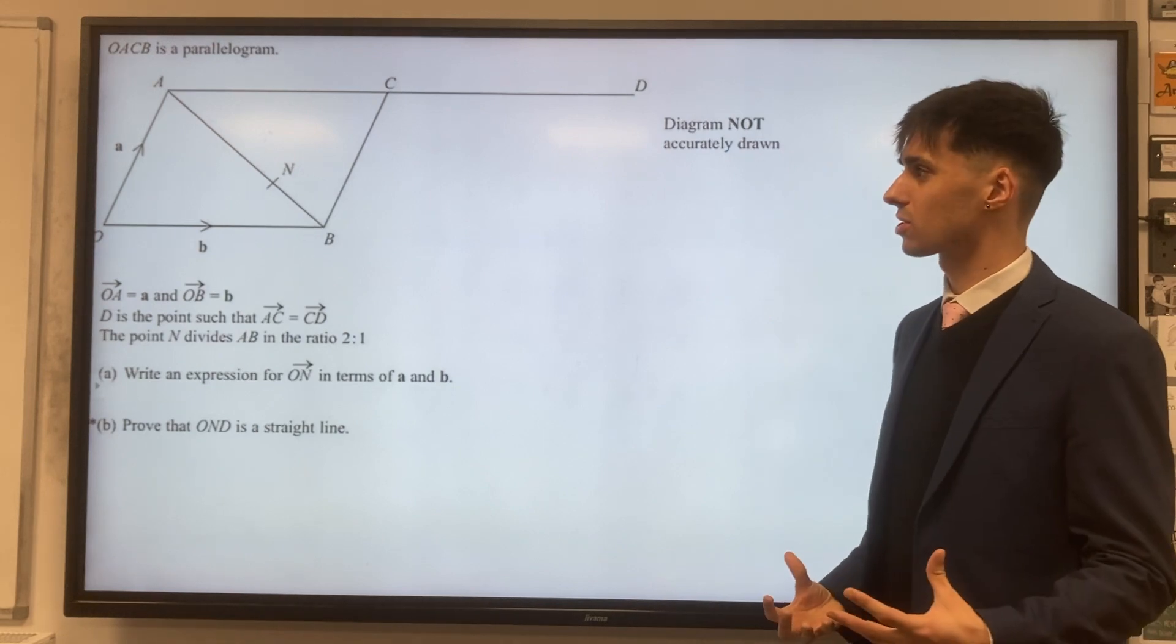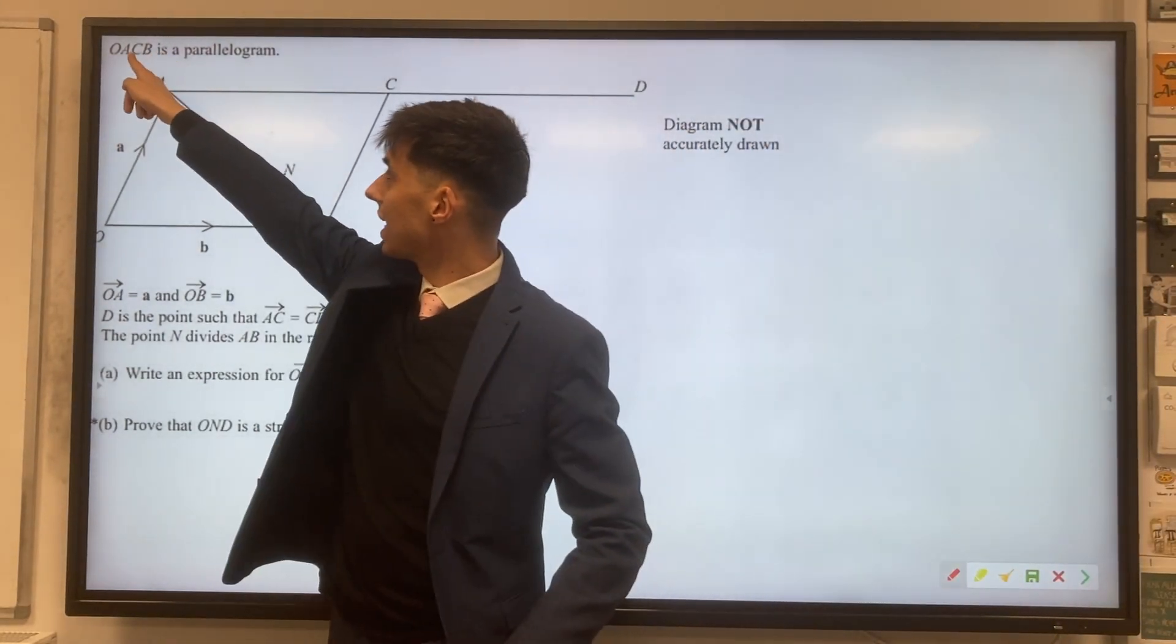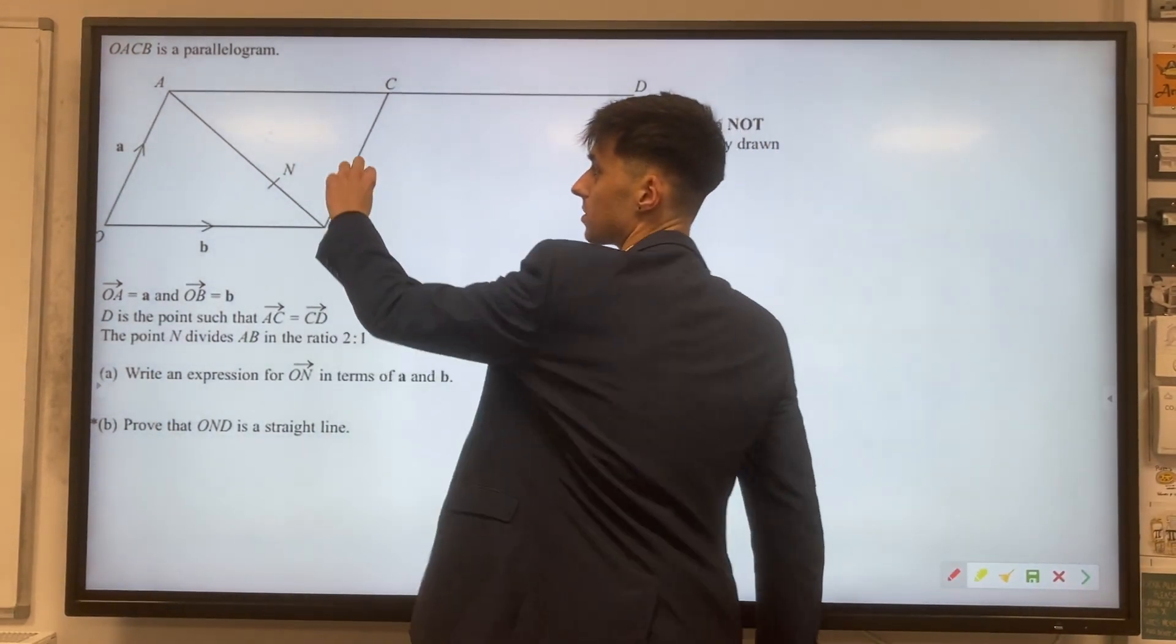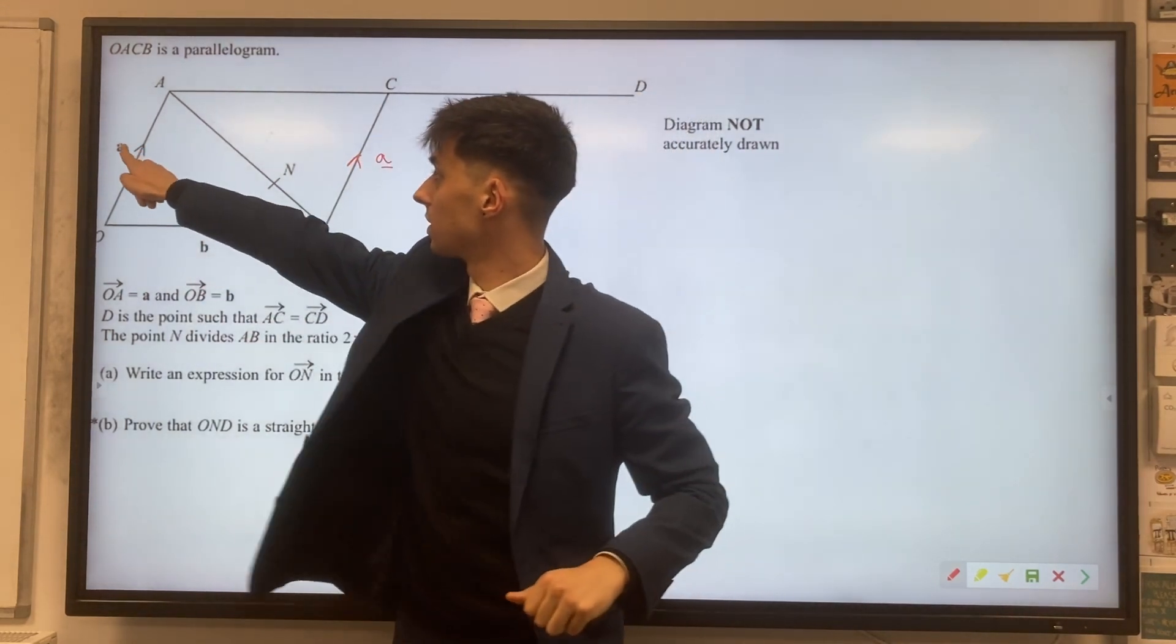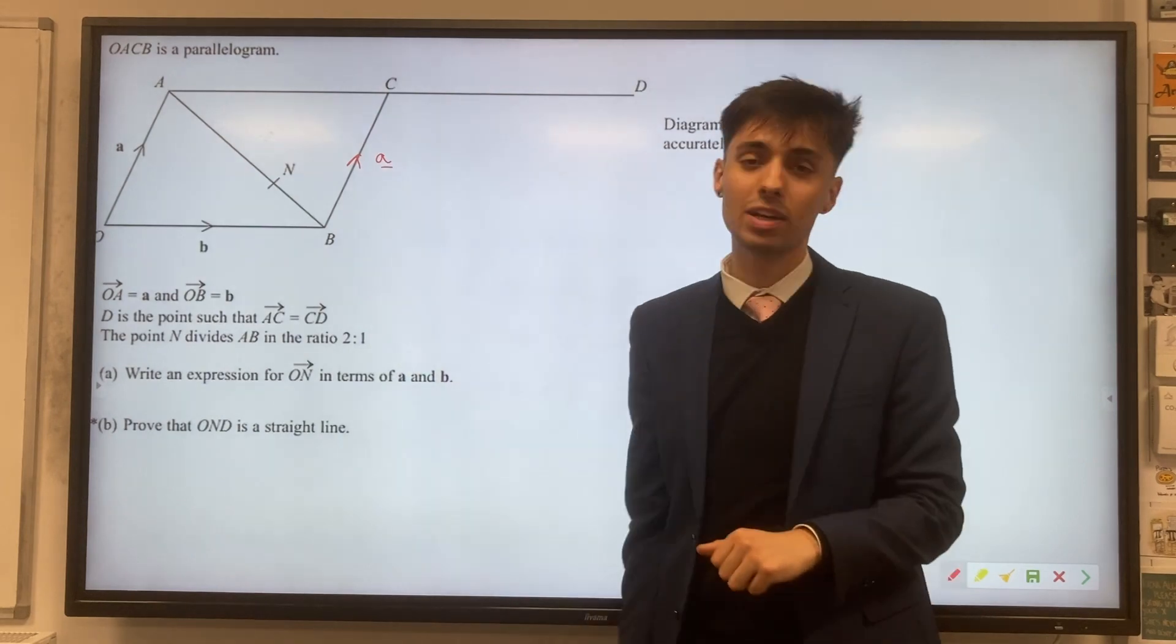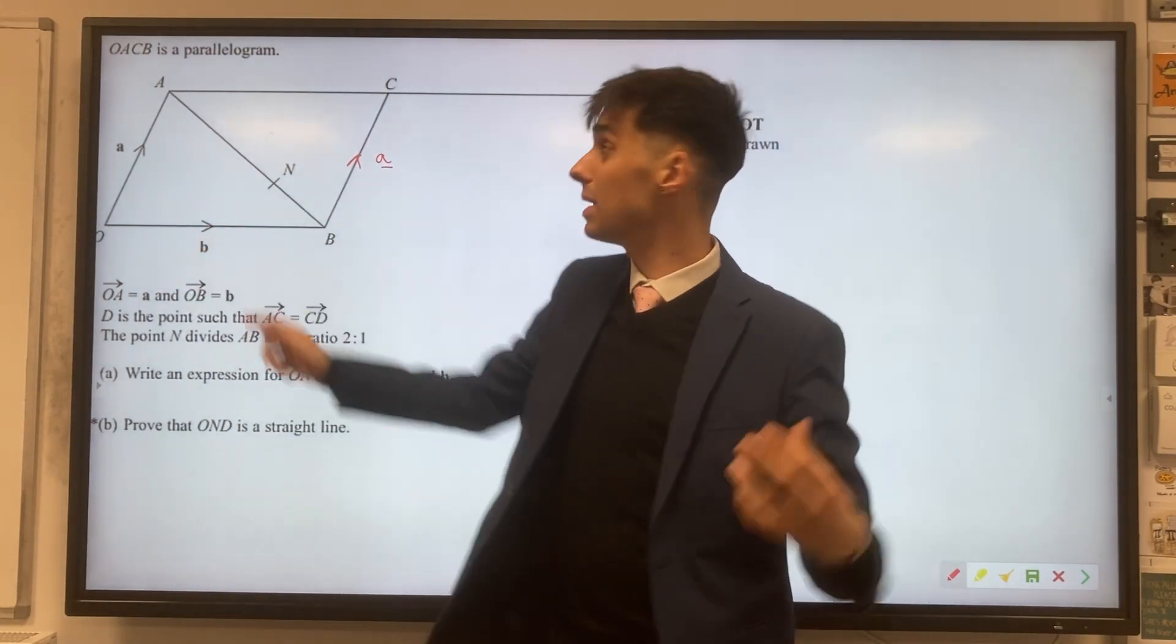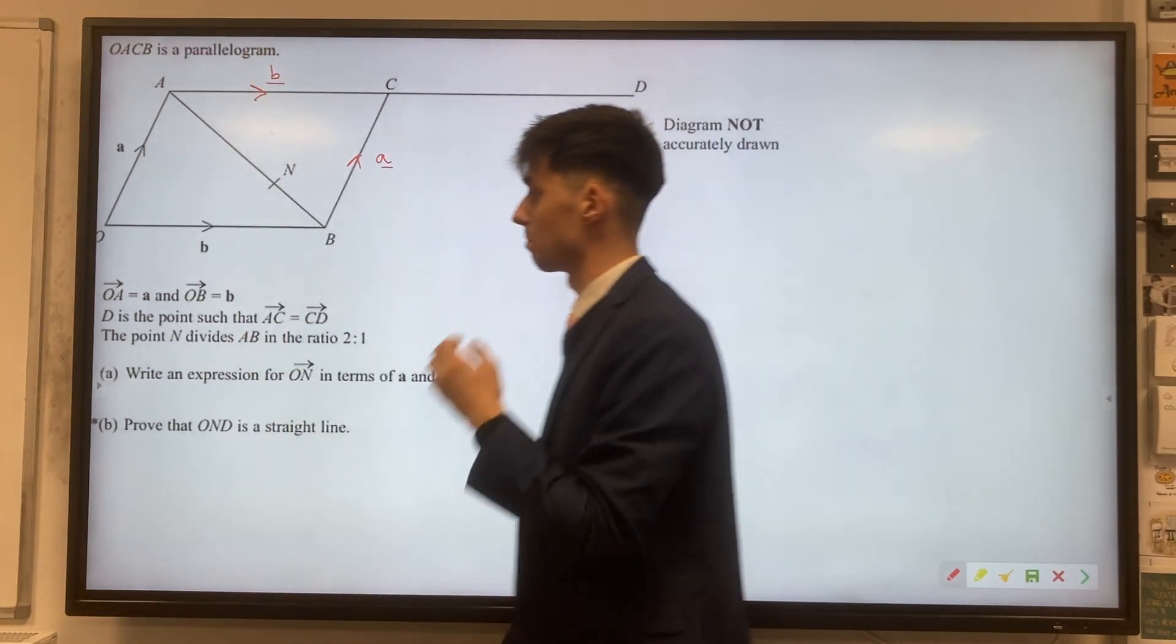So first of all, let's use a diagram to help us work some things out. OACB is a parallelogram, so that tells us that these opposite sides are going to be equal. So this side here OA is vector a, so equally BC will be vector a. And same with the bottom side here, OB is vector b, so that means AC will also be vector b.